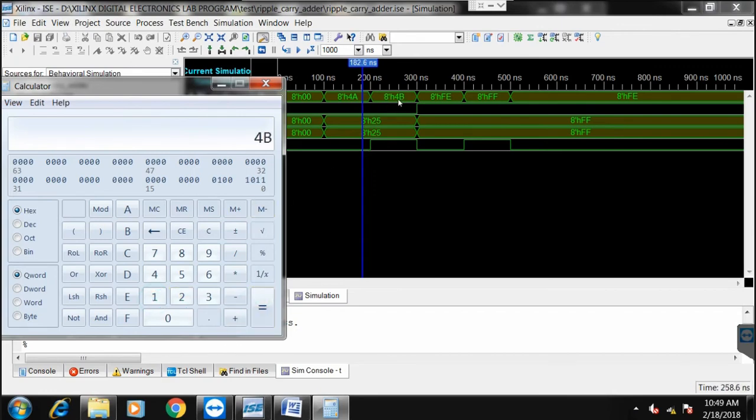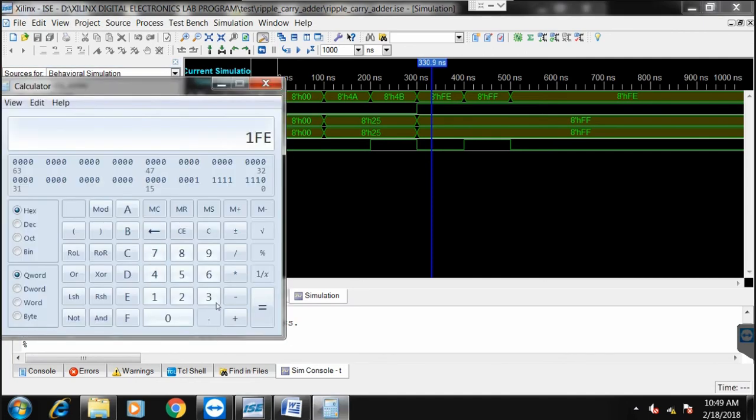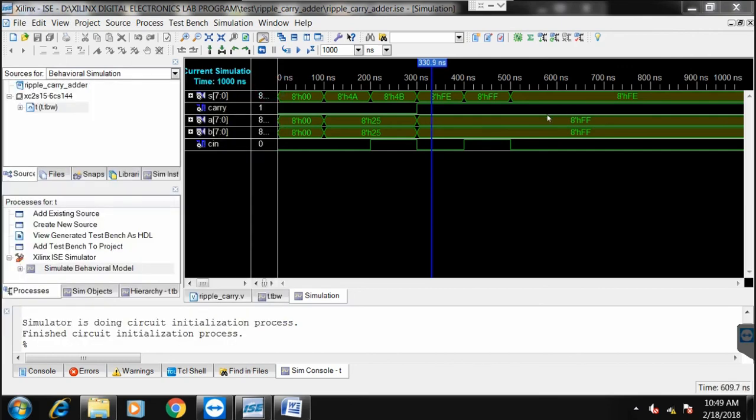This is also correct. Next we can calculate for ff. Ff plus ff gives 1fe. Yes, the output is correct. The cout is 1 and sum is fe. Ff plus ff plus 1 gives 1ff. So 1ff comes in the carry and sum is ff.